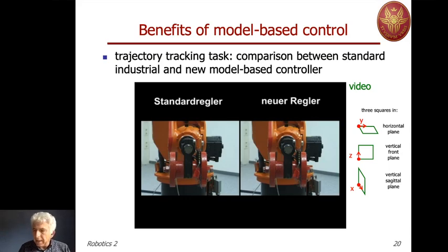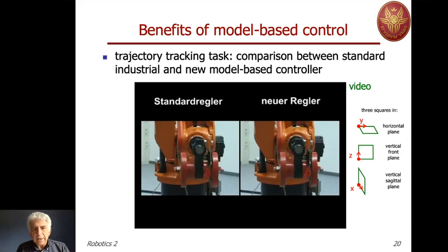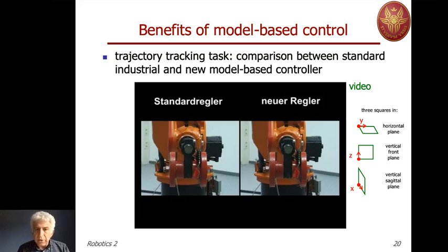Let's look again at how it works: first square, second square, and third square. You can see that the difference is visible visually, so you can imagine that in terms of dynamic accuracy there is a huge gap between the two controllers.